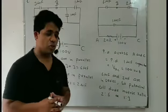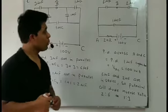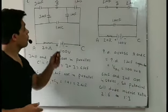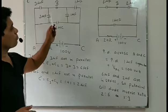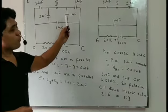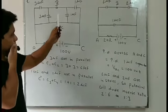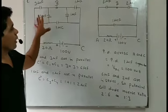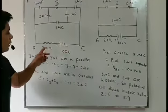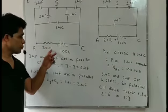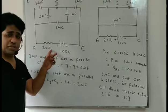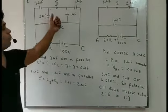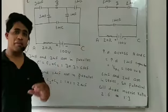First of all, I am going to explain the circuit diagram. We are given a circuit in which 3 microfarad, 3 microfarad, 1 microfarad, 1 microfarad, and 1 microfarad capacitors are connected. We are also given a 20 ohm resistance and a 100 volt battery, with terminals A, B, and C.